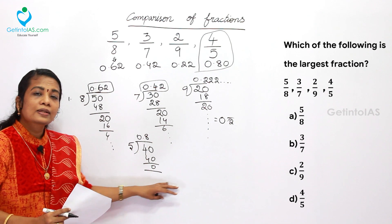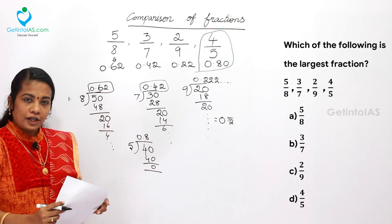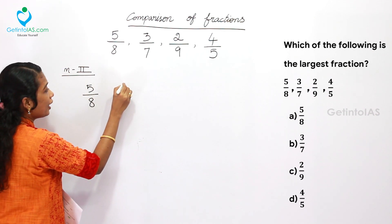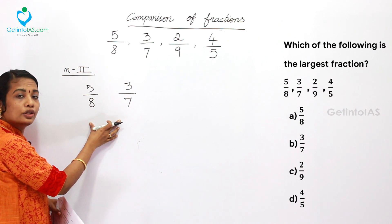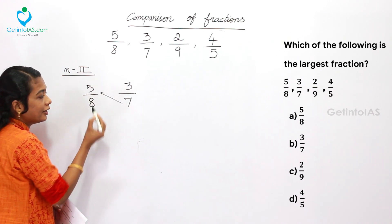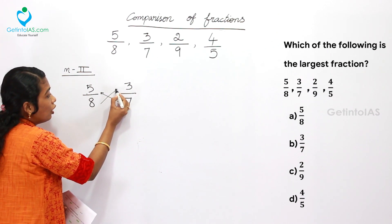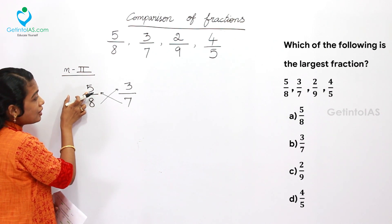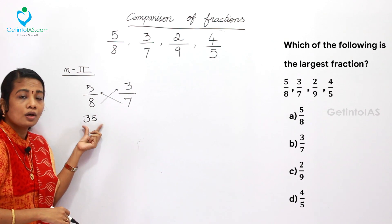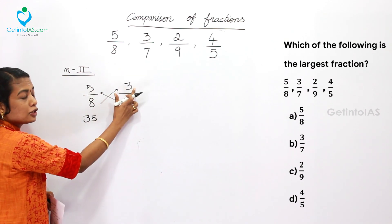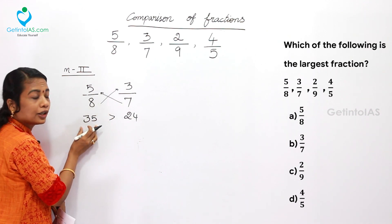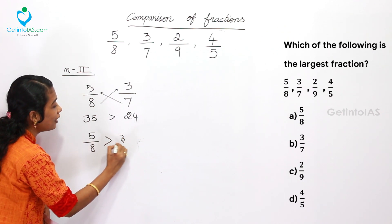Now let's solve the same using Method 2, cross multiplication. Take the first two fractions: 5/8 and 3/7. Cross multiply: the first fraction's numerator with the second's denominator — 5 into 7 is 35, written on the left side since the numerator is on the left. Then 8 into 3 is 24. Since 35 is greater, 5/8 is greater than 3/7.